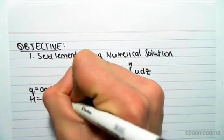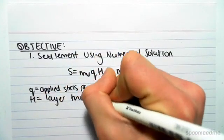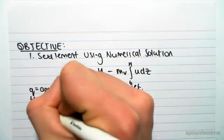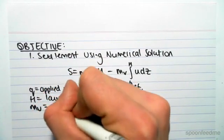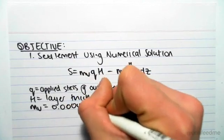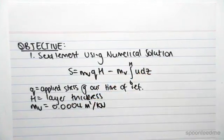H is the layer thickness. mv will be given to us; it's a constant value. For our case, mv will be 0.0004 m² per kN, so this value will be given.